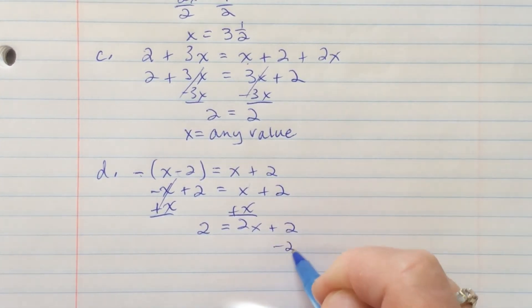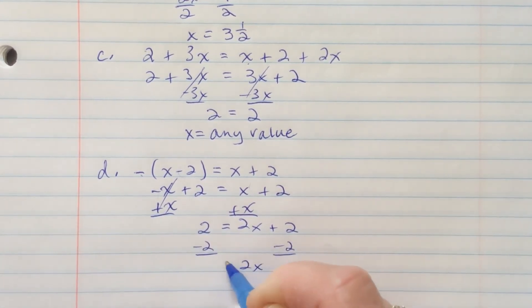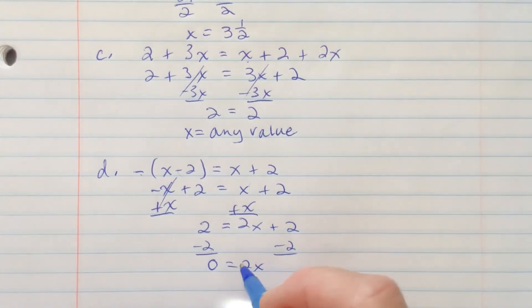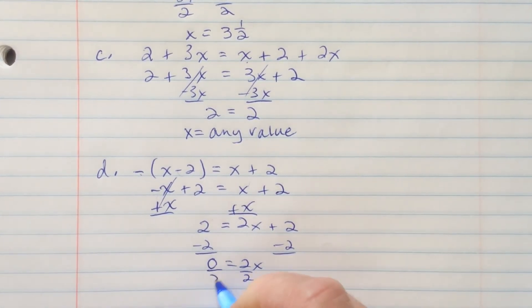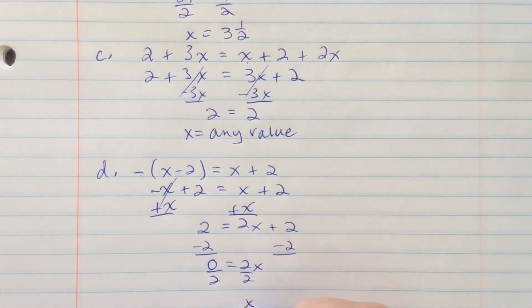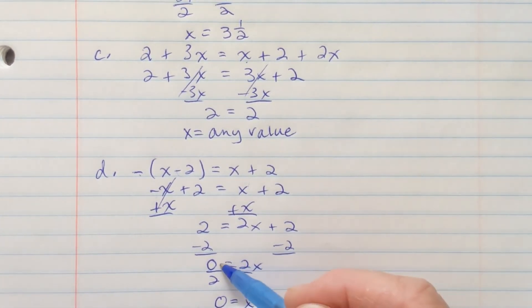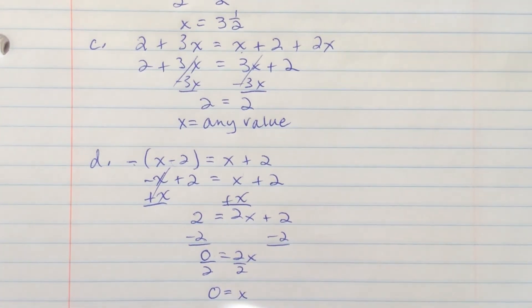Now, I'm going to subtract 2 from both sides to get the 2x by itself. 2 minus 2 is 0. The last step is 2 divided by 2. 0 divided by 2 is 0. 2 times 0 equals 0. And that's the solution.